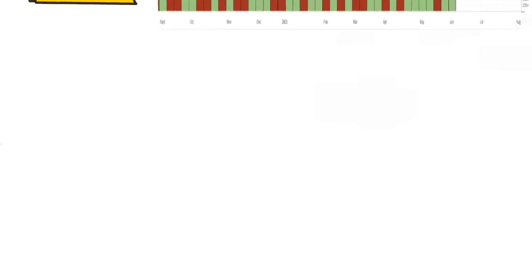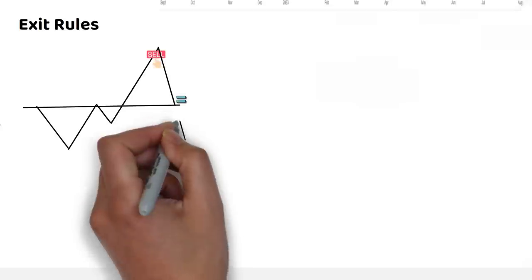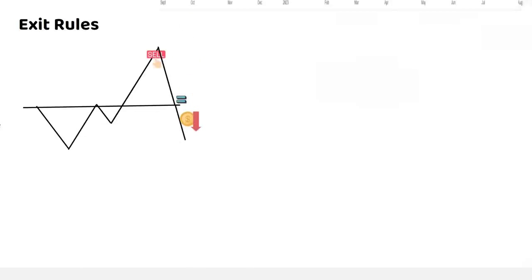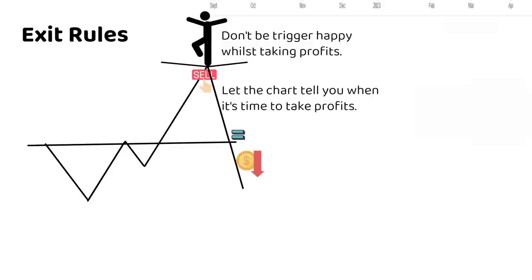It's also important to have set exit rules that help you lock in profits and not allow profitable trades to break even, or even worse, turn into losing trades. There is, however, a balance. You don't want to cut the reward element of the trade too early either, so you need a mechanism where you feel the trade is starting to lose its momentum and have the discipline to exit when that happens.